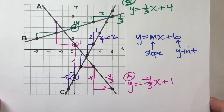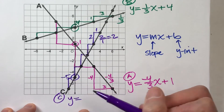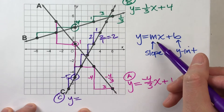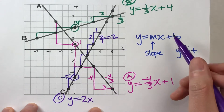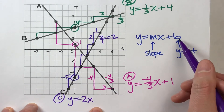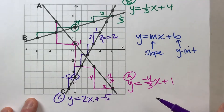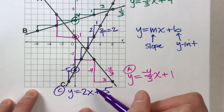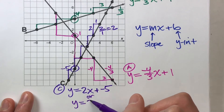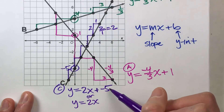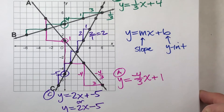We now have enough information to write our equation for line C. y equals my slope, 2, so y equals 2x, plus my y-intercept, which is negative 5 — so plus negative 5. Or, if you want to simplify, you could write y equals 2x minus 5. Either one means the same thing.